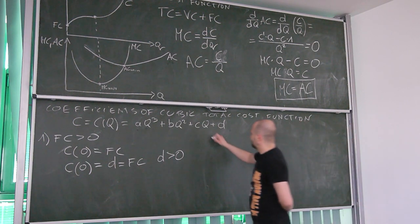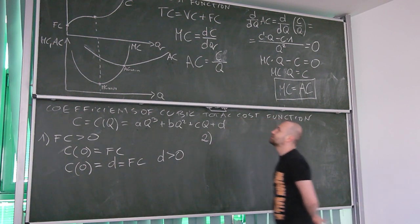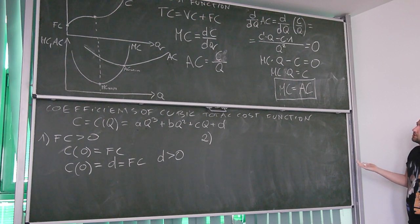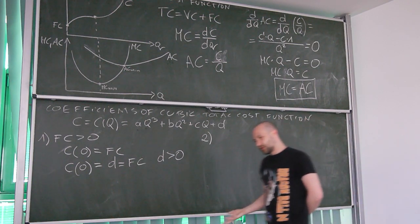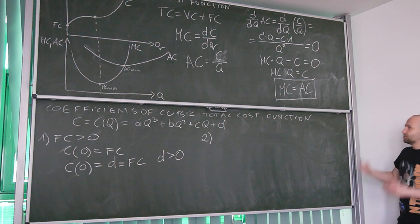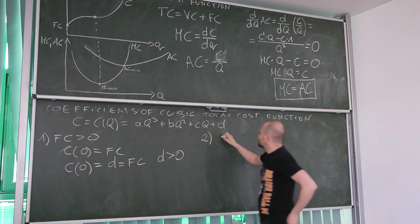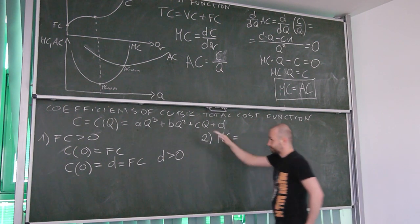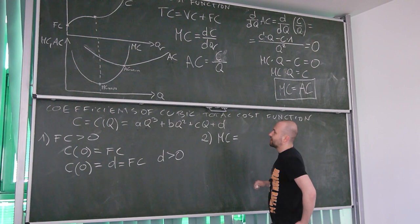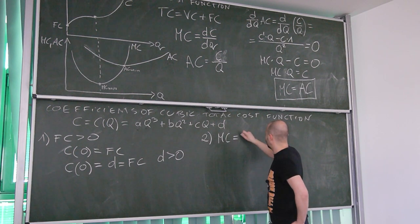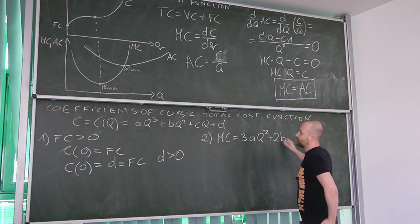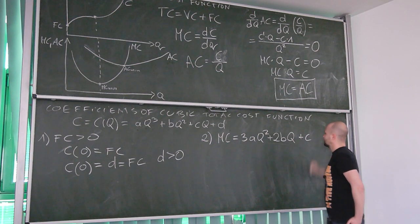Secondly, we need to be sure that this function is always positive, meaning the first derivative — marginal cost — should always be positive. Let's find marginal cost: differentiating the cubic gives 3aq² + 2bq + c.